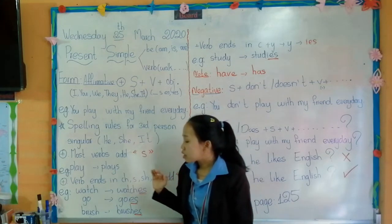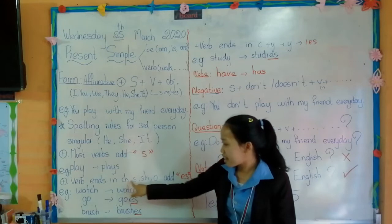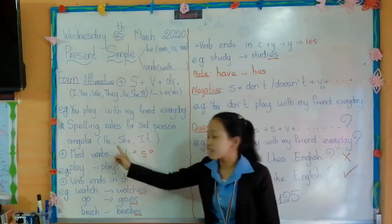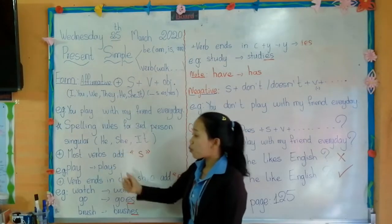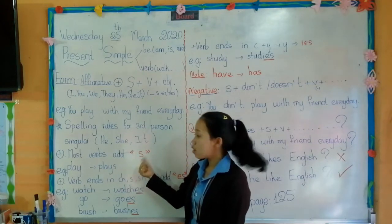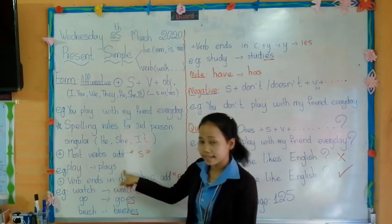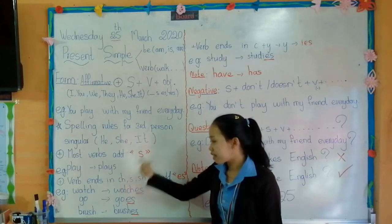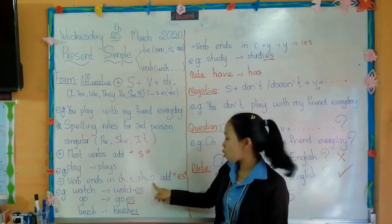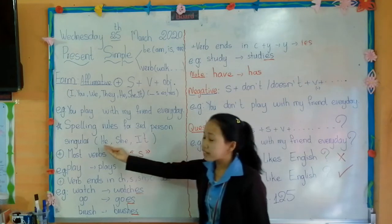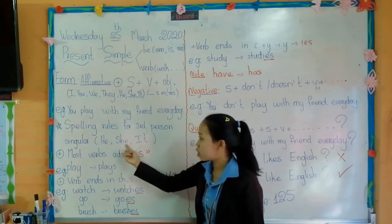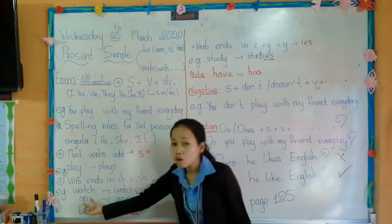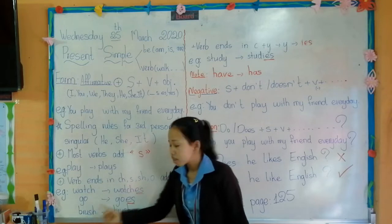And if the verb ends in S, CH, SH, O, or X, when you use with third person singular he, she, or it, you add ES. For example, watch changes to watches, go changes to goes, brush changes to brushes.